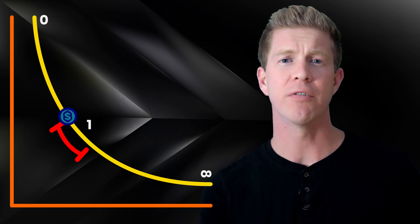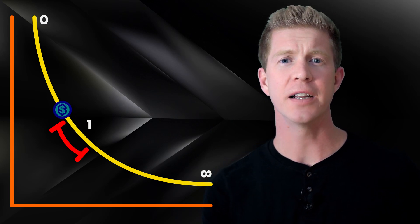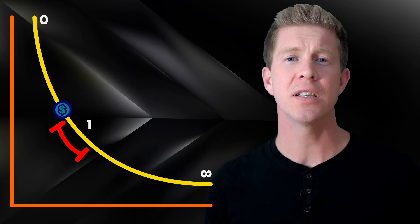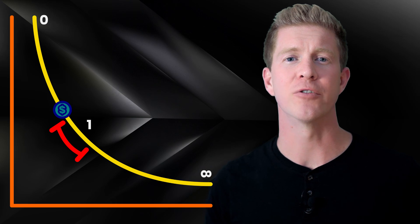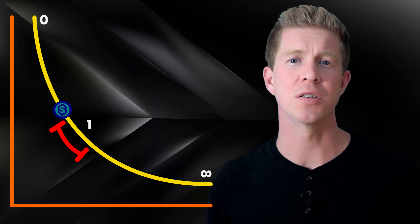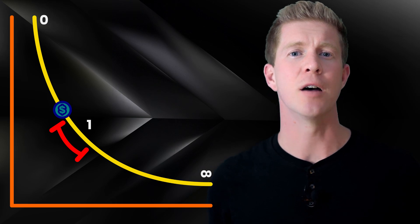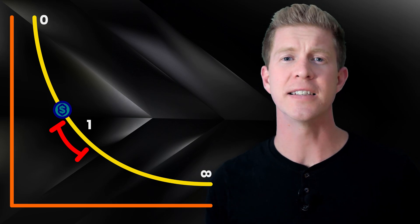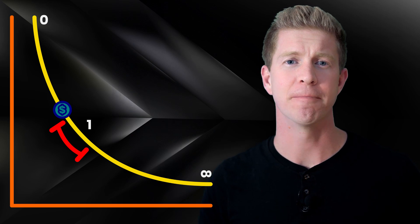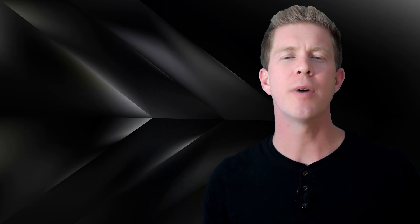If the price moves outside the specified range, the liquidity provider will suffer from impermanent loss, meaning they'll be left with 100% of the least valuable asset. This is where range orders come in — they allow us to use this functionality to specify price limits at which we want to trade tokens.